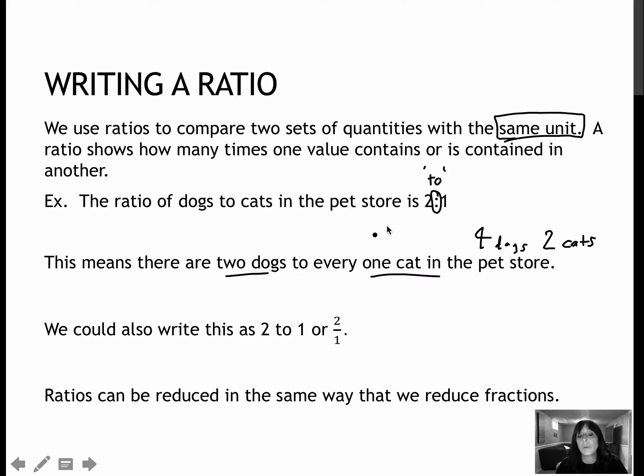There are other ways to write a ratio, so a colon is one way. Another way is to actually write it in words, two to one, or of course as a fraction, two over one.